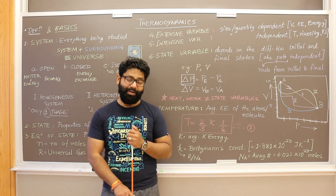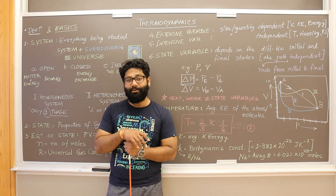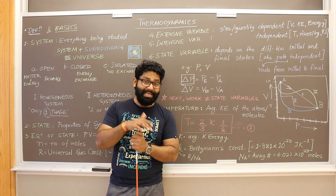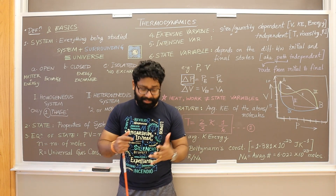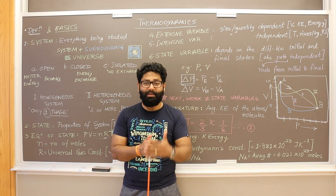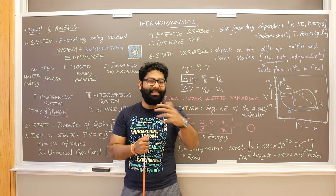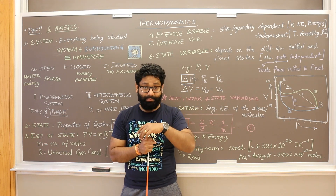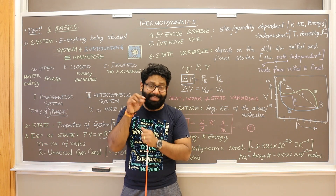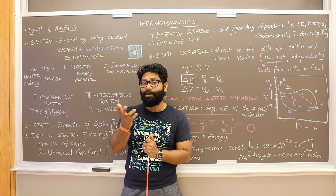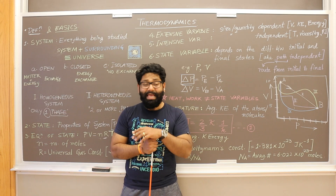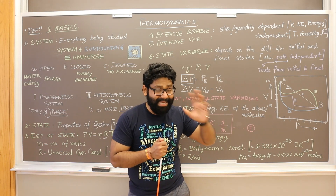On the opposite, we have intensive variables — those which do not depend on the quantity or size of the system. For example, the temperature of the system is an intensive variable. Viscosity is another: whether you have one gallon or ten gallons of water, the viscosity remains the same. The refractive index of water also remains the same. Properties that do not depend on the amount of matter inside are called intensive variables.